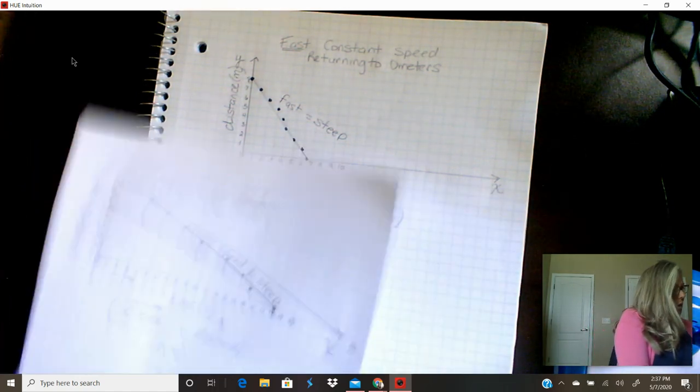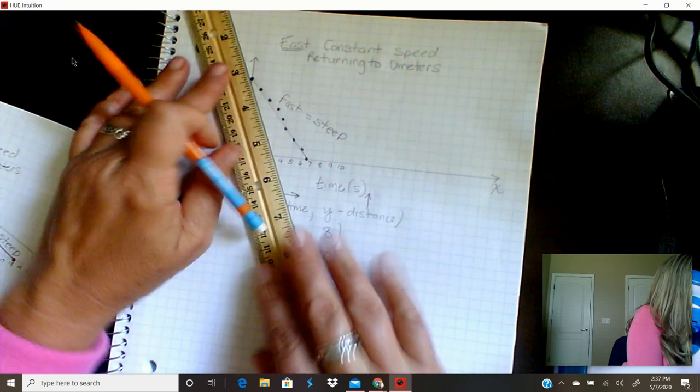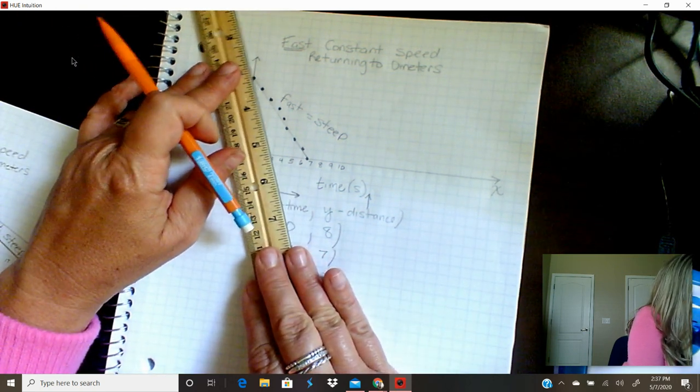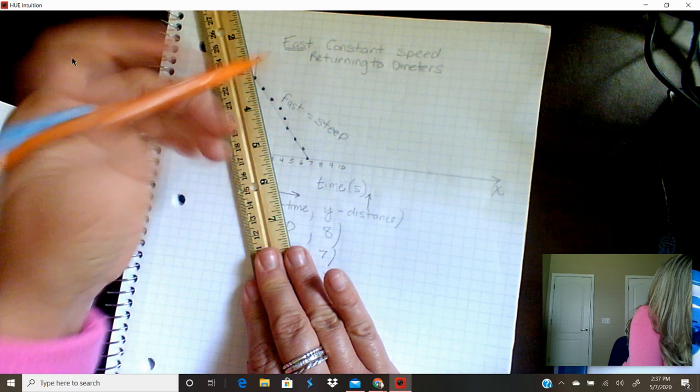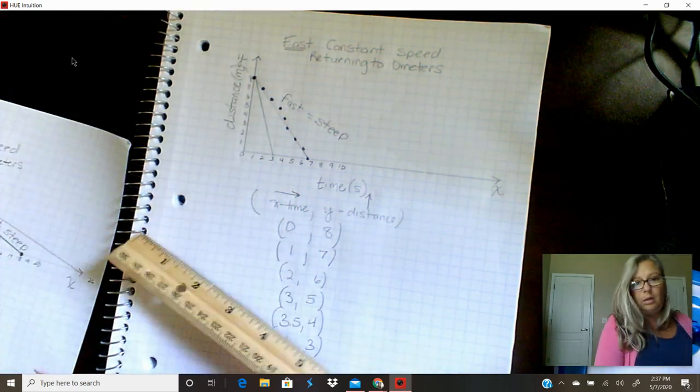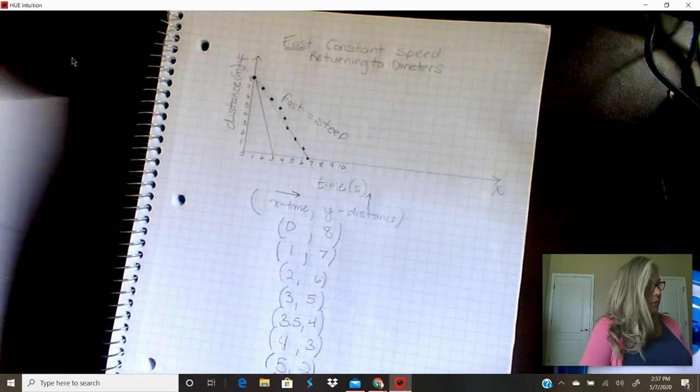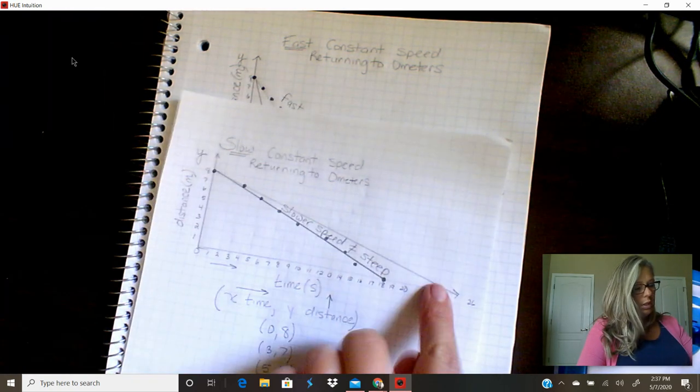Imagine y'all, if Nick walked even faster, and let's say he got there in 4 seconds—let's make it 3. Let's say he just booked it and ran and he made it in 3 seconds. Look what that would look like. Look how steep that would be. Right? Just like if he took even longer, it would be even less steep.